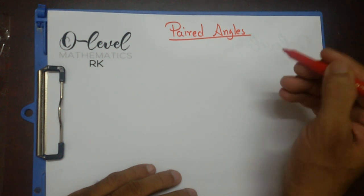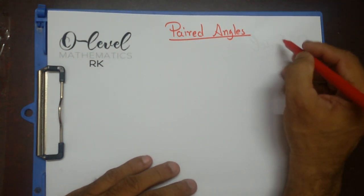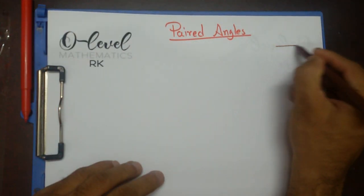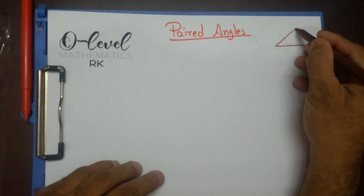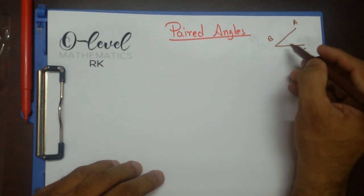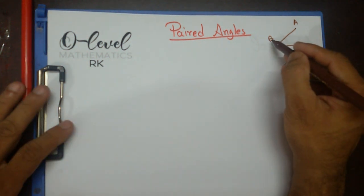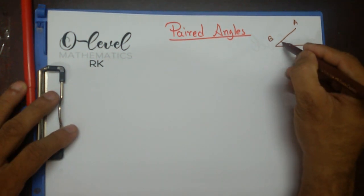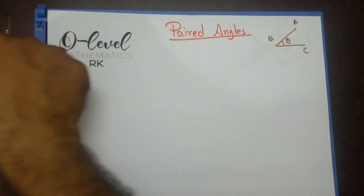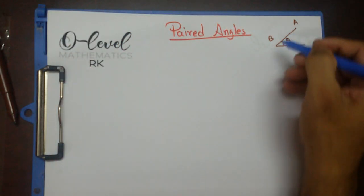First I'm going to deal with vertically opposite angles. In my last video I showed you when two line segments meet at a point. Let's say AB and BC, they meet at a point. This meeting point is known as the vertex, and they form an angle. Let's say this angle is theta. Now if we extend these two lines.